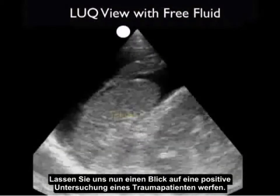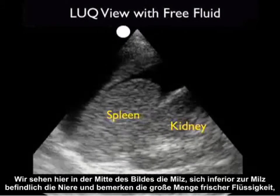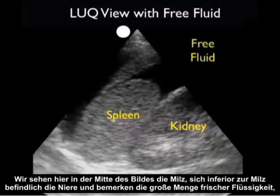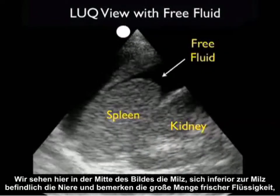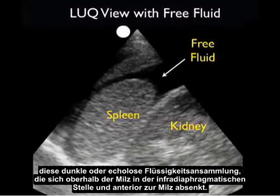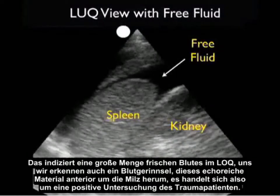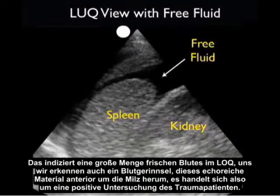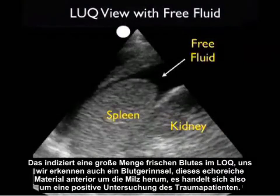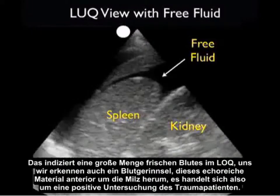Now let's take a look at a positive exam from a trauma patient. We see the spleen in the middle of the image, the kidney inferiorly, and notice the large amount of fresh fluid — that dark or anechoic collection — layering out above the spleen in the infradiaphragmatic location and anterior to the spleen. This indicates a large amount of fresh blood in the left upper quadrant, and we also see a blood clot — that echogenic material waving around anteriorly to the spleen. A positive exam in a trauma patient.